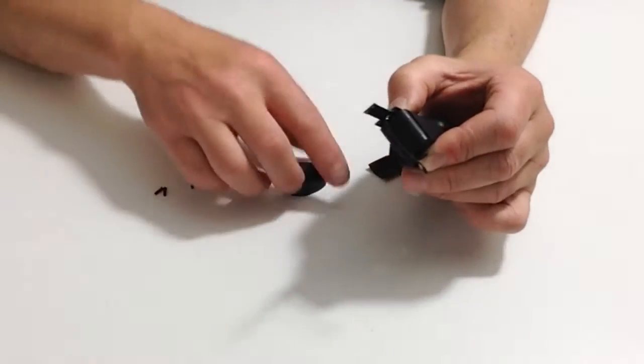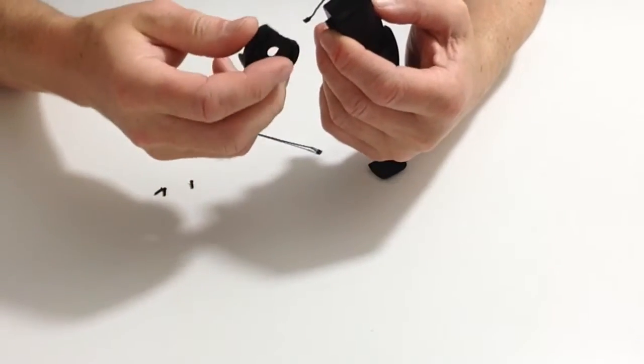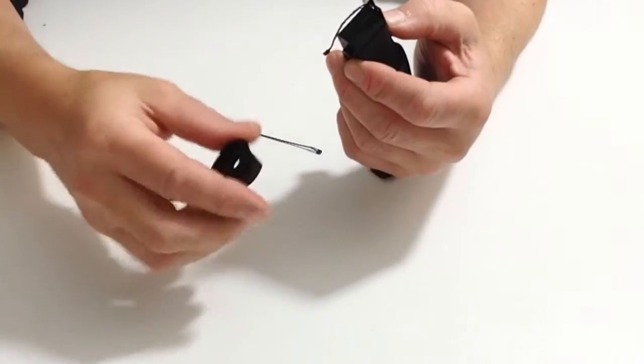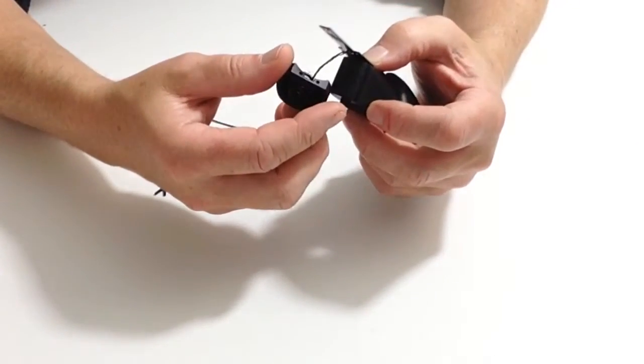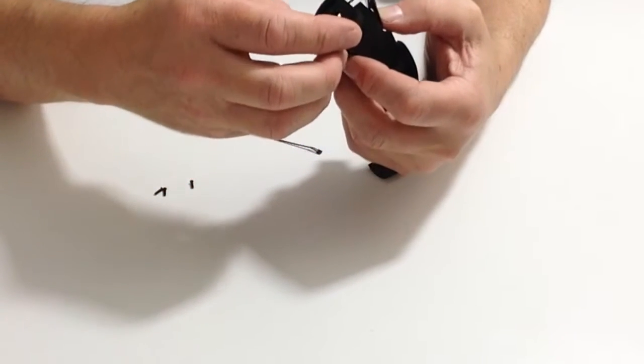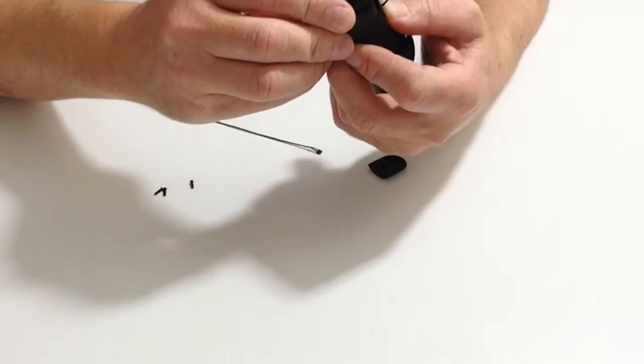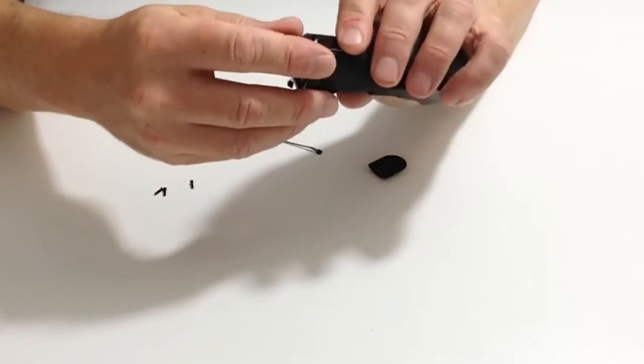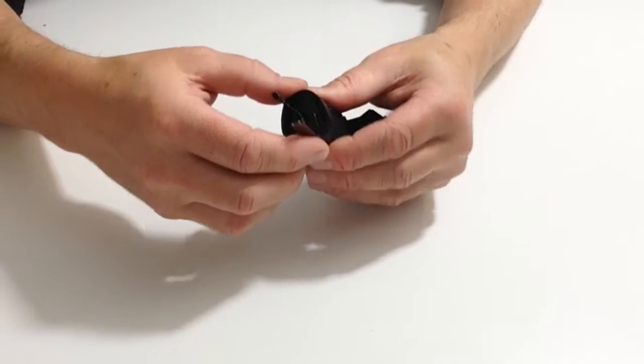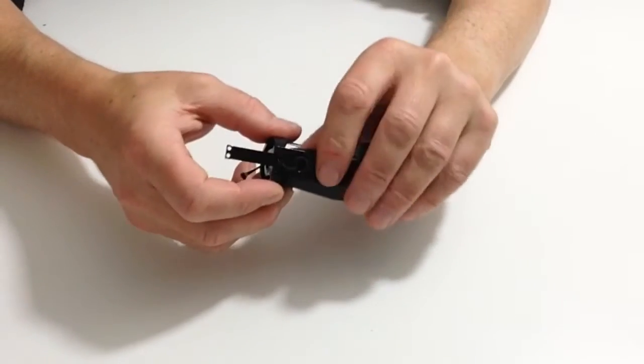Once you have done that, take the shoulder frame. Make sure the servo cable goes through the hole and place the shoulder frame onto the servo like so, making sure that that is straight as per the instructions as you can see here.